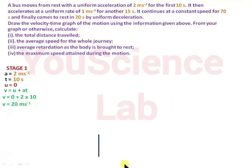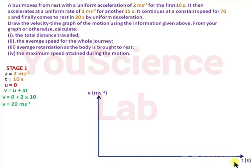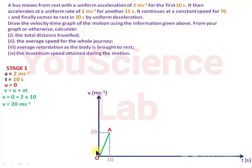Draw a vertical line to represent the speed in meters per second, and a horizontal line at the origin to represent the time t in seconds. Next, draw the line OA to represent the car's acceleration from 0 to 20 meters per second in 10 seconds. The first stage of the journey is represented by triangle OAB.